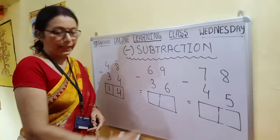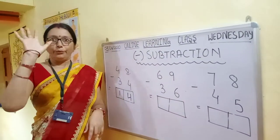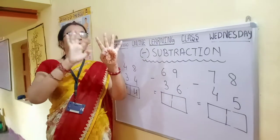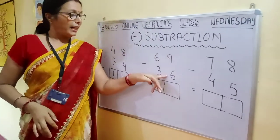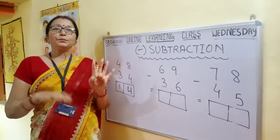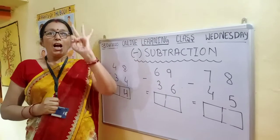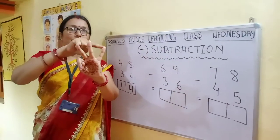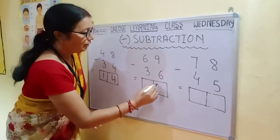Now the second question: the first number is 9. Take out your 9 fingers — 5 fingers here and 4 fingers: 5, 6, 7, 8, 9. The next number is 6 — take away 6 fingers: 5 fingers and 1 finger. How many are left? 1, 2, 3. Write down 3.